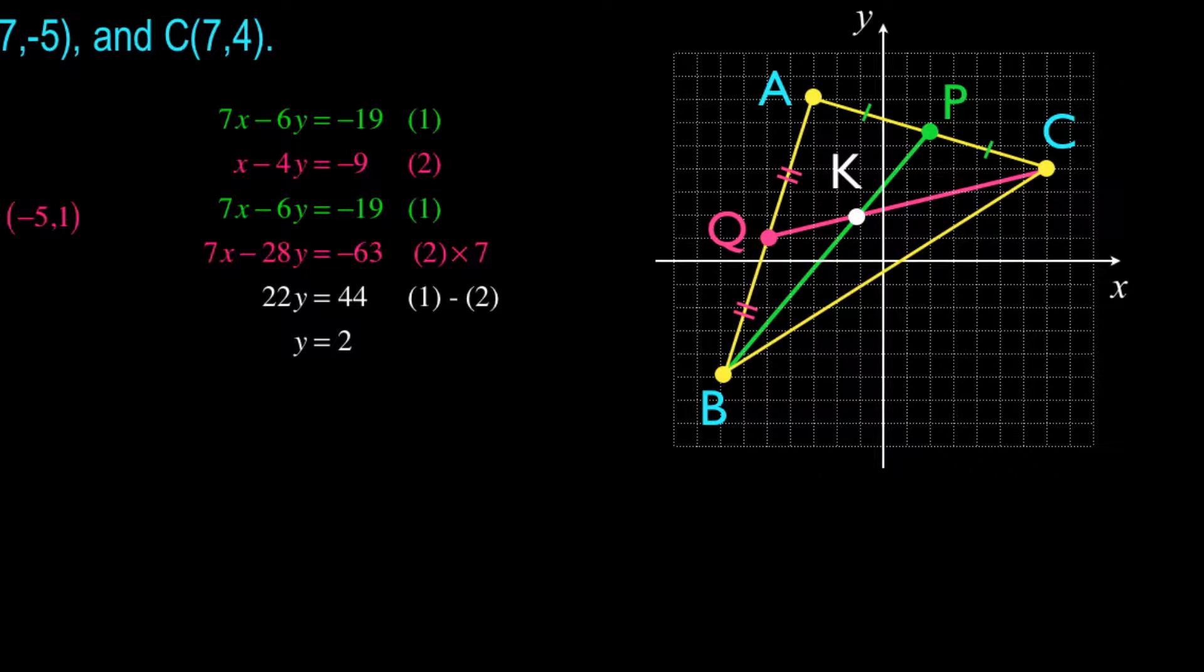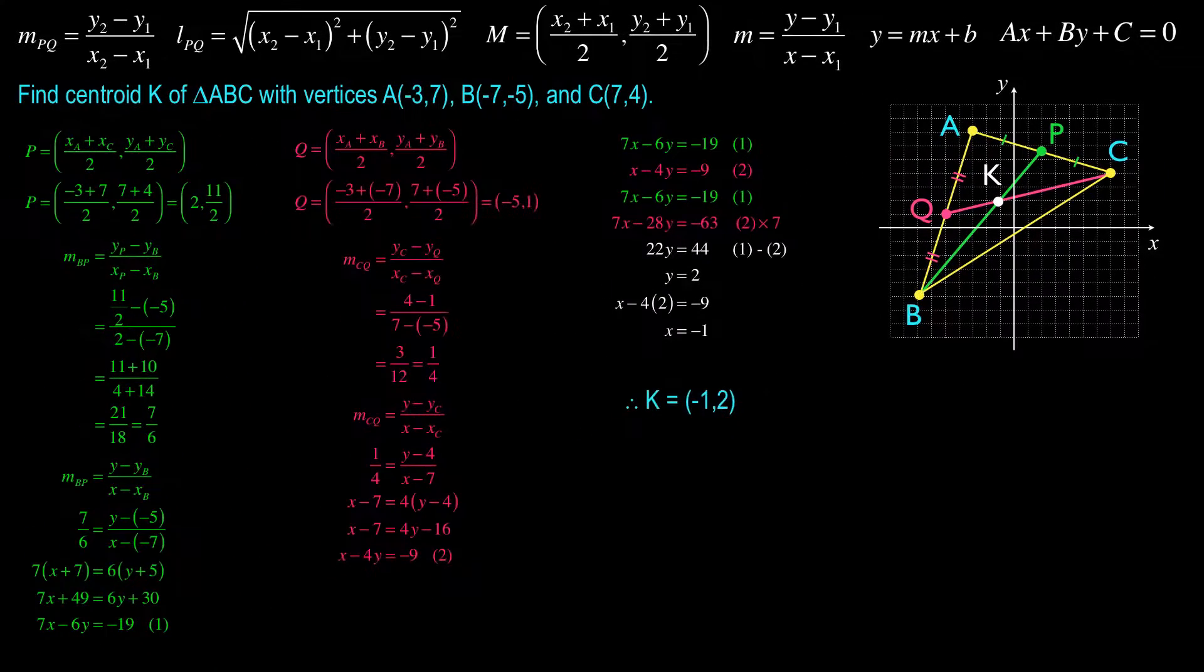Well, you know, if you look at my diagram, which I drew to scale and tried to draw pretty accurately, it certainly does look like the value for K is somewhere awfully close to 2, and I'm referring to the Y value. And so if you use that same diagram, you might say, it's looking like the X coordinate might be negative 1. Substituting in for Y in equation 2, we get X subtract 4 times 2 equals negative 9. That leads to X equaling negative 1, and now we have the problem solved. The coordinates K of the centroid are negative 1, 2.